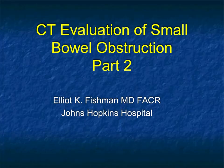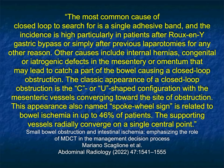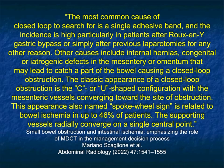Hi, this is Elliot Fishman and welcome to part two of small bowel obstruction. We started speaking about some of the causes of bowel obstruction and some of the things we look for — for example, the feces sign. We also spoke about how we try to look for transitions. As we look for bowel obstruction, we want to look for the presence of internal hernias, defects in the mesentery or omentum. We'll look for what's called a C or U-shaped configuration with a closed loop obstruction, with mesenteric vessels tracking toward the site of obstruction. This has also been described as a spoke wheel sign, and when you see that, it's a high incidence of patients having ischemia. But let's look at some examples.